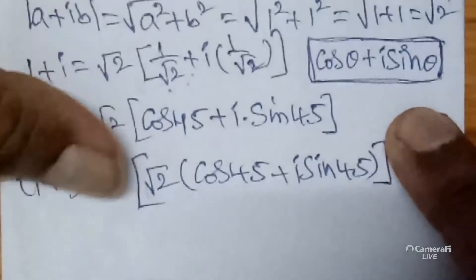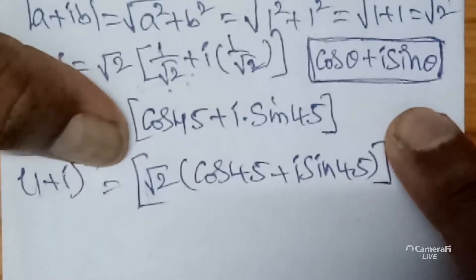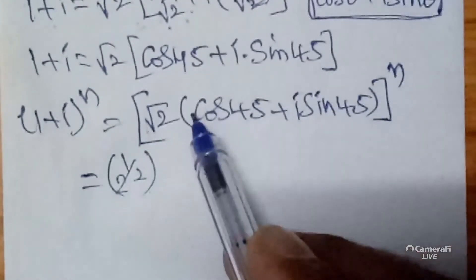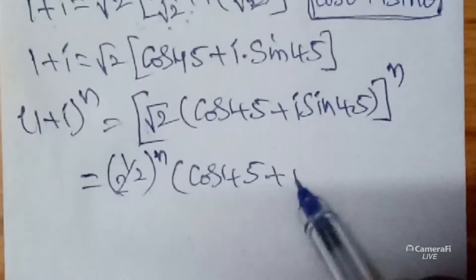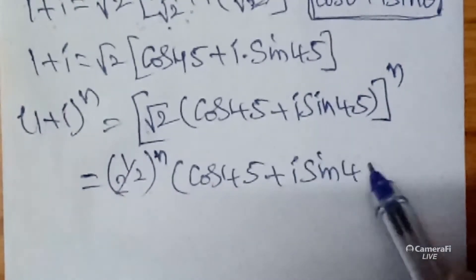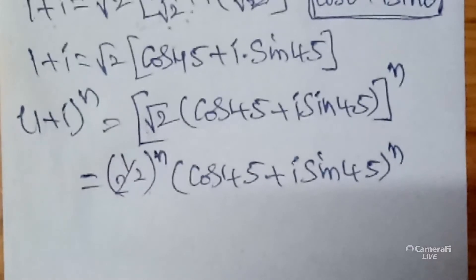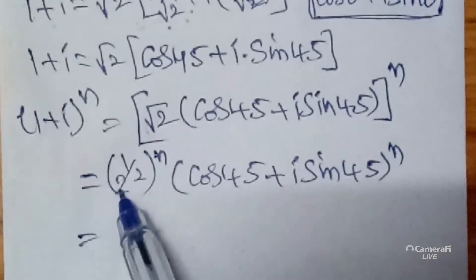First of all, without power, what is the value of 1 plus i? It is root 2 into cos 45 plus i sine 45. Now root 2 is 2 to the power 1 by 2, and the power splits individually. So we get 2 power 1 by 2 whole power n, into cos 45 plus i sine 45, whole power n.